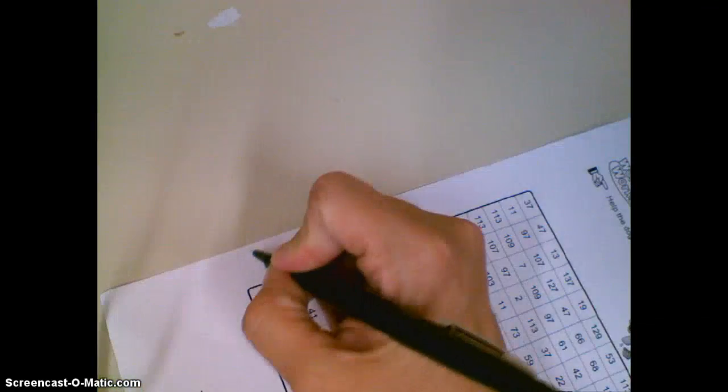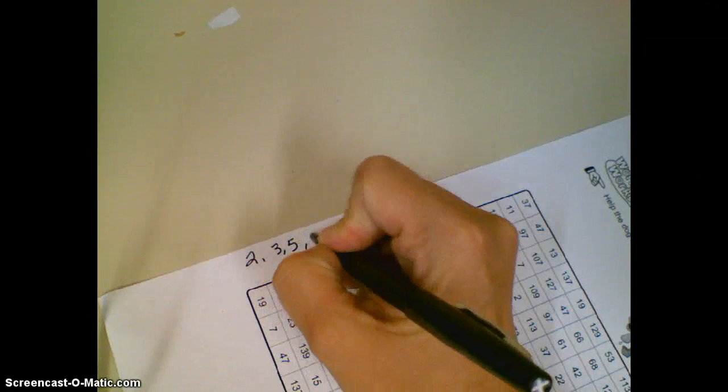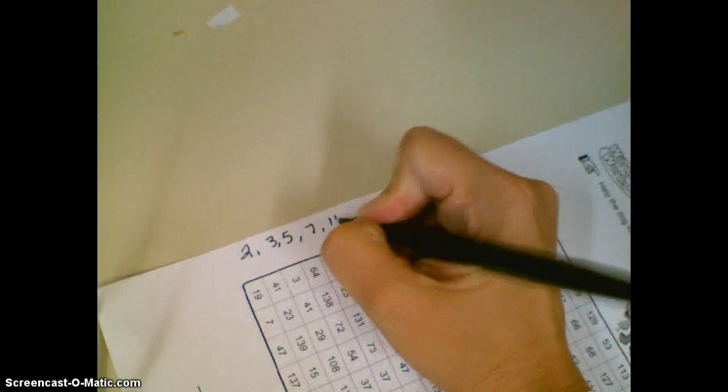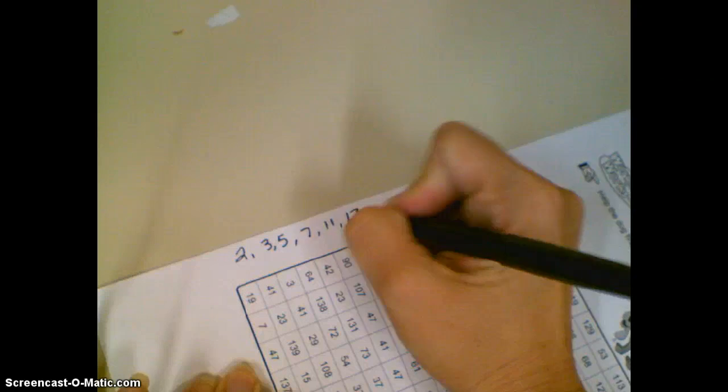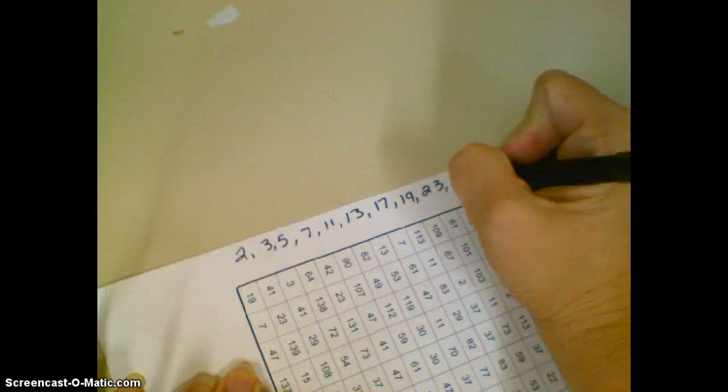So let's start by making a list of our prime numbers so we can use that for reference. So as we're going across, the first ones are easy: 2, 3, 5, 7, 11, 13, 17, 19, 23, 29.